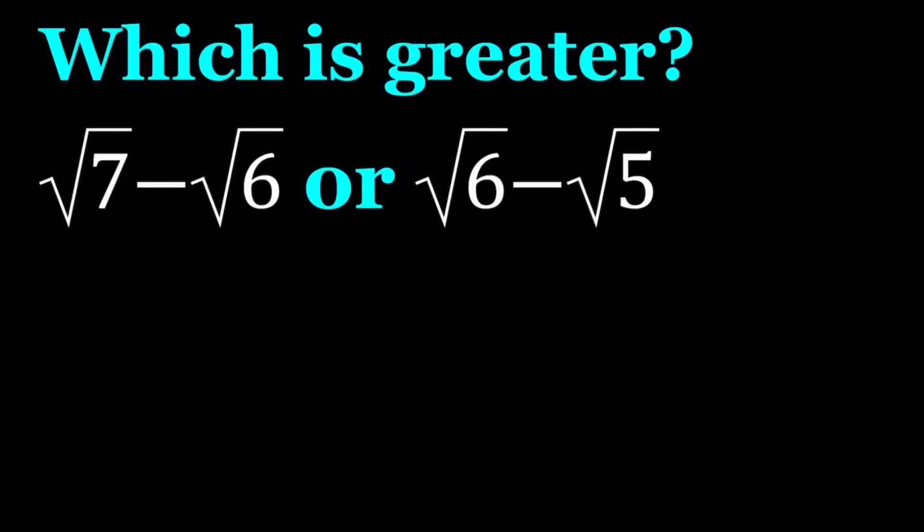Hello everyone. In this video, we're going to be comparing two numbers. We have square root of 7 minus the square root of 6, and square root of 6 minus the square root of 5. And we're going to find out which number is greater. I'll be presenting four methods. Let's go ahead and take a look at the first one first.